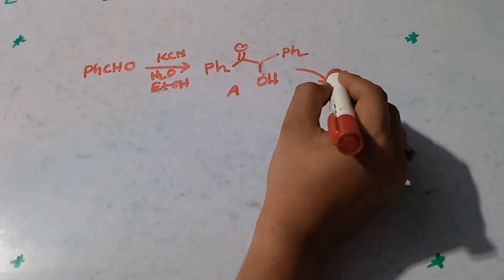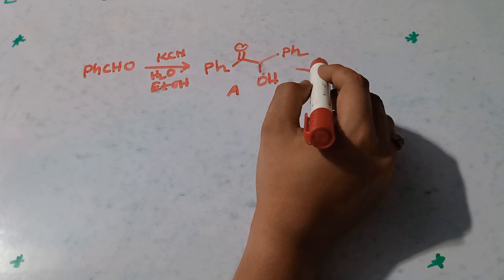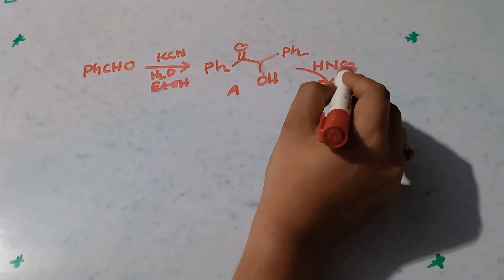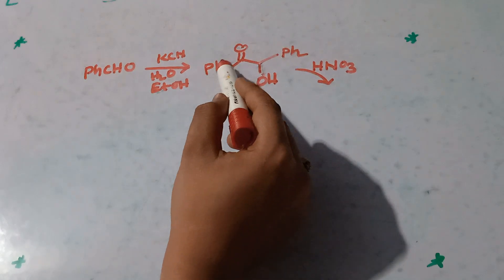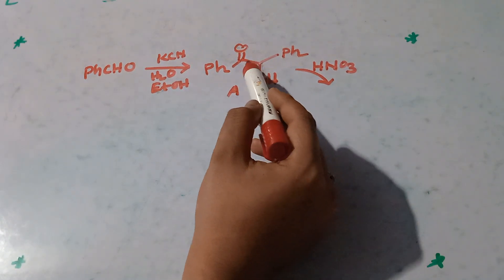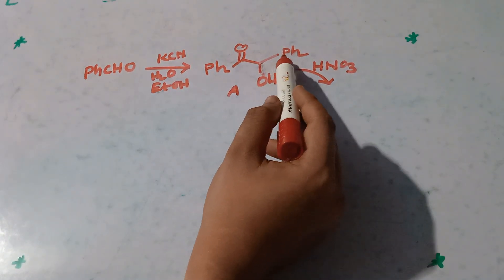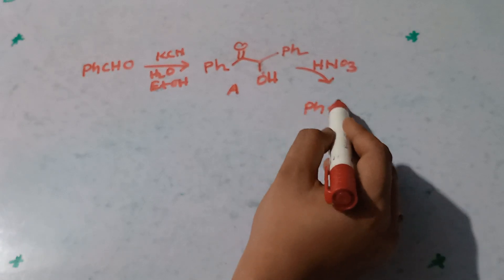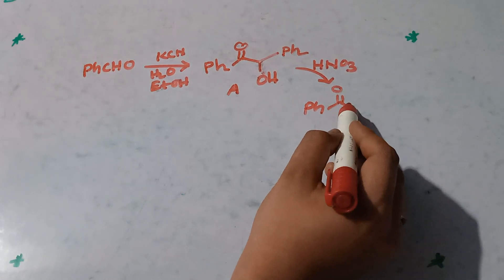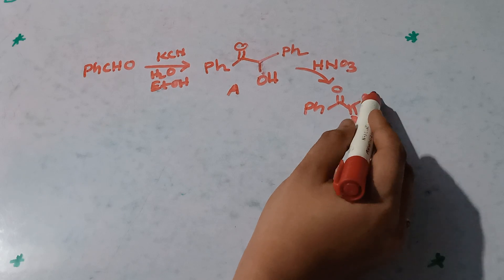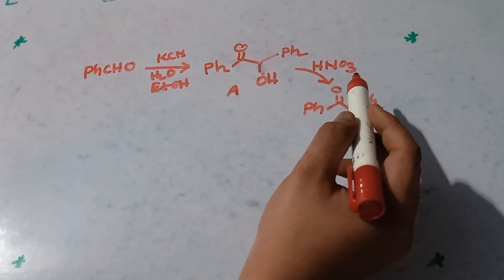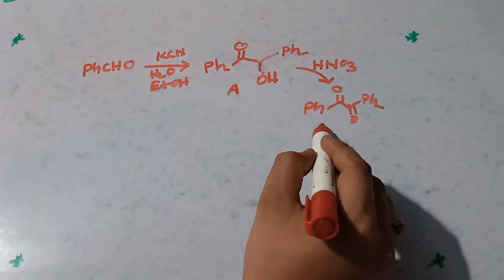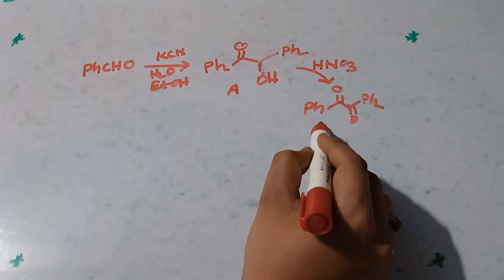In the second step, if we treat it with HNO3 — nitric acid, which is an oxidizing agent — only the alcohol group can be oxidized. The secondary alcohol, upon oxidation, gives a ketone. So the product is Ph-C(=O)-C(=O)-Ph. The name of this compound is benzil, B-E-N-Z-Y-L. So this is compound B.